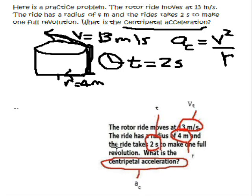Then we have the ride takes two seconds to make one full revolution. And here's our radius. Our radius is four meters. Circle that and put an r there. So our goal here is to calculate the centripetal acceleration, which is in meters per second squared. We'll notice that we have some extra data here in the problem because there's no t in the equation.